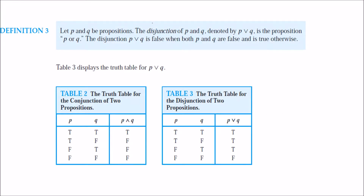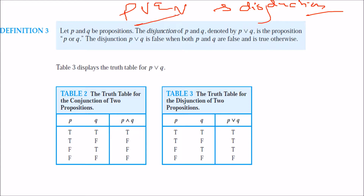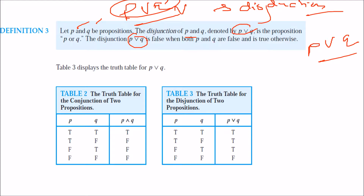Then we have disjunction. What is disjunction? p OR q means both have to be false to make it false, otherwise it is always true. If p and q are propositions, the disjunction p OR q is false only when both p and q are false; otherwise it will always be true. Remember: p AND q is only true when both are true; p OR q is only false when both are false.